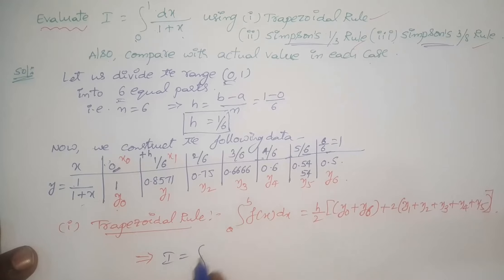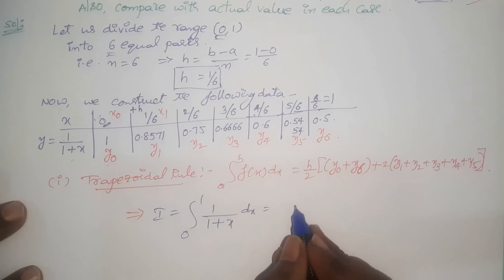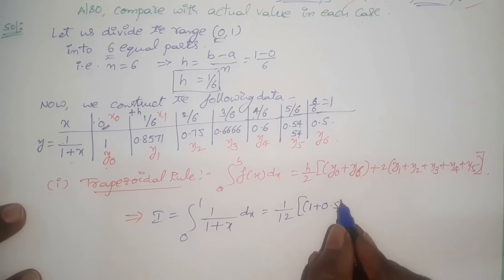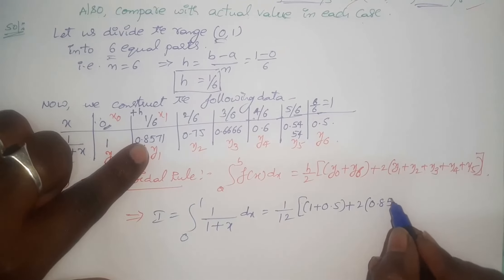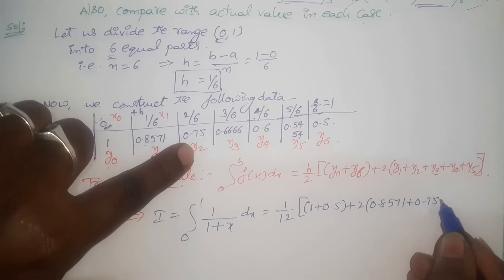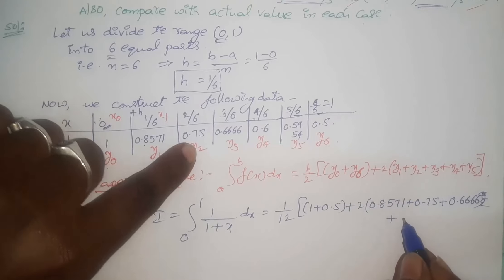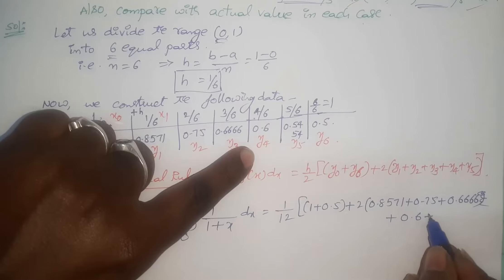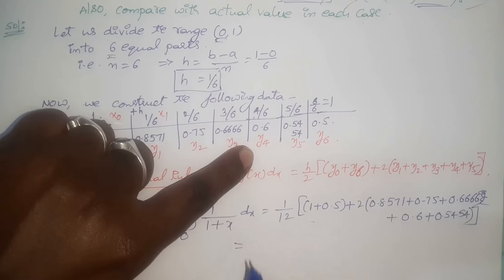So I equals the integral 0 to 1 of 1 by 1 plus x dx equals h by 2, which is 1 by 6 by 2, that is 1 by 12, multiplied by the sum of first and last — 1 plus 0.5 — plus 2 into y1 which is 0.8571, plus 0.75, plus 0.66666, plus y4 which is 0.6, plus 0.5454.